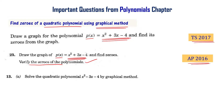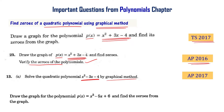Solve the quadratic polynomial x² - 3x - 4 by the graphical method — this appeared in the AP final exam 2017. Draw the graph for P(x) = x² - 5x + 6 and find the zeros from the graph — this is from the Telangana final exam 2018.